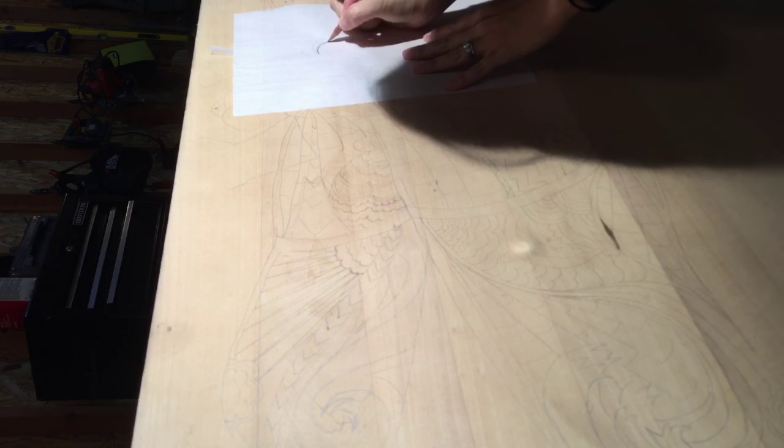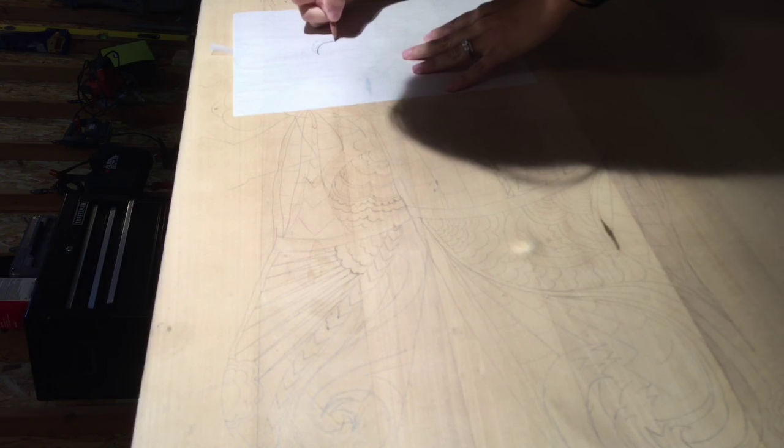And trace over your image again. Push down pretty hard because what's going to happen is it's going to transfer the graphite that's on the other side of it right onto the wood. And just make sure that you stay within the lines.